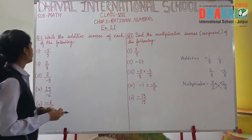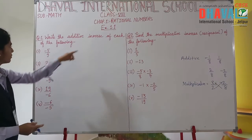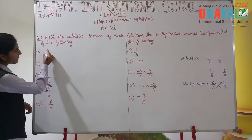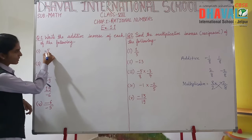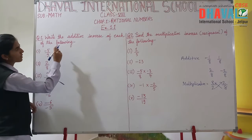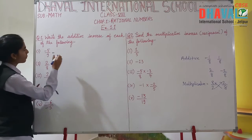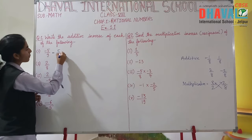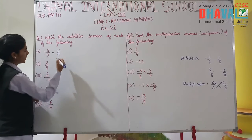Same as that, let's first solve the additive inverse. This number is given as negative: minus 5 upon 9. So its additive inverse will be the opposite, that is, positive 5 upon 9.